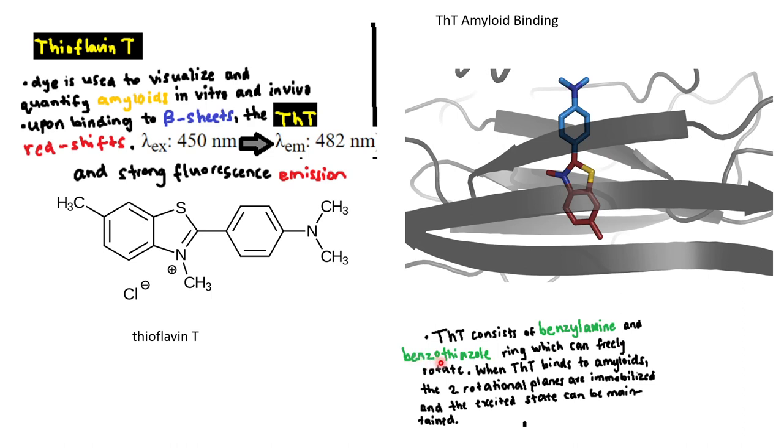In a normal solution, ThT - these two rings can rotate around this point and the two rings can freely rotate. But when ThT binds the amyloids, the two rotational planes are suddenly fixed and this changes the emission wavelength that ThT emits when it undergoes fluorescence.